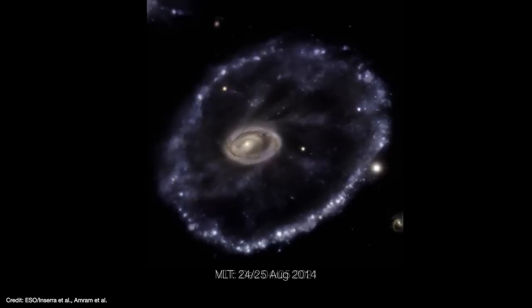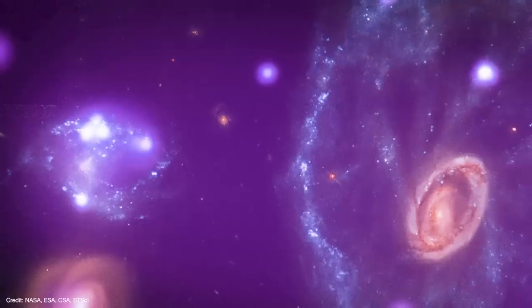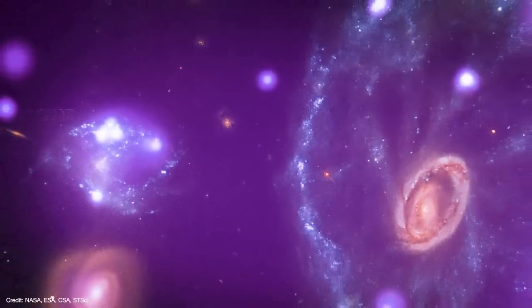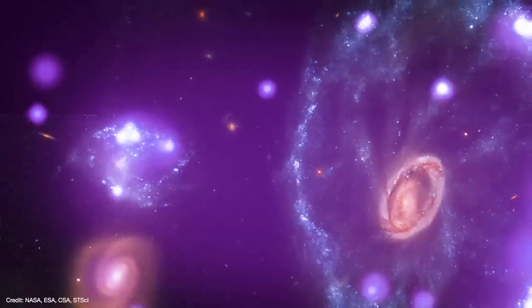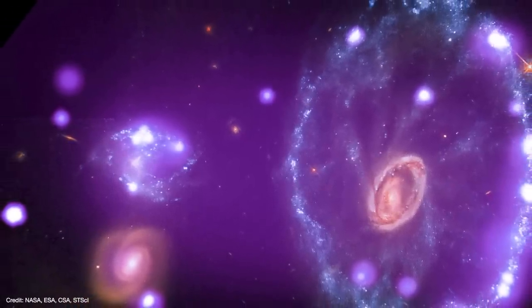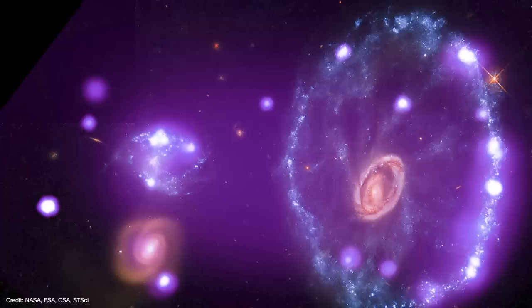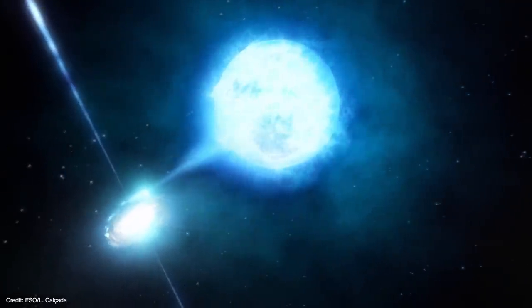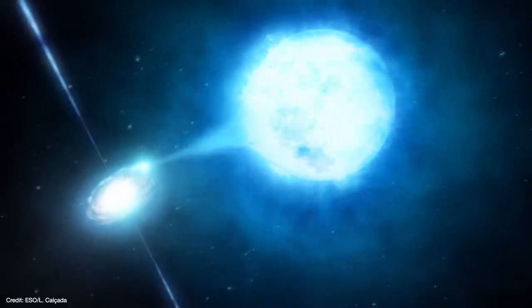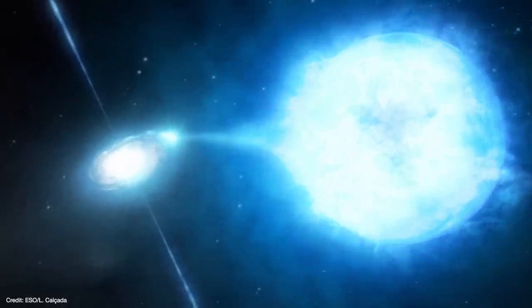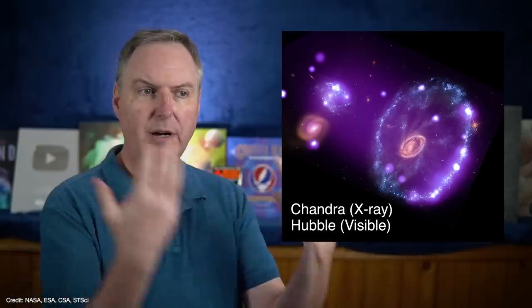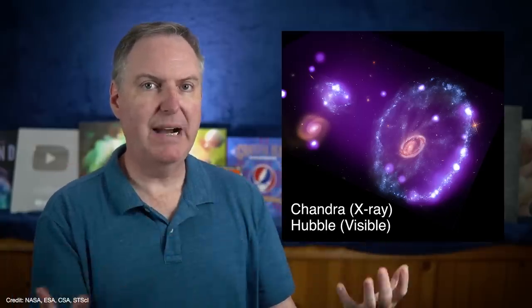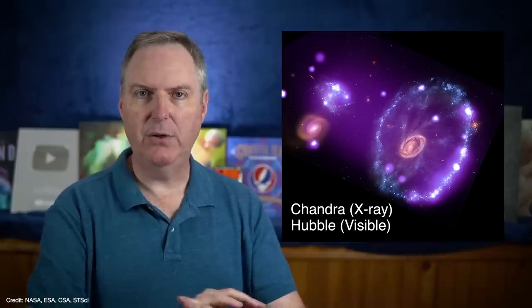Supernovae go off in dusty galaxies all the time, but we really can't see them when there's so much dust in the way. So Webb's ability to see through so much of this dust means it's going to be able to detect far more supernovae than we can right now. Observations taken with the Chandra X-ray Observatory reveal the location of several ultra-luminous X-ray sources, and these are likely neutron stars and black holes in binary systems that are accreting material from their companions. As matter falls in, they form accretion disks which heat up to hundreds of millions of degrees and radiate enormous amounts of X-rays.